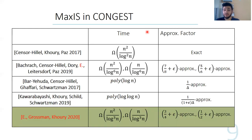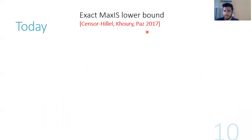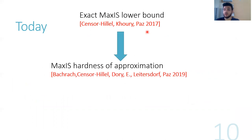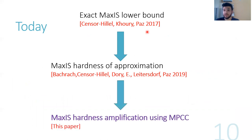In this work, we amplify the previous hardness of approximation result by applying, for the first time, multiparty communication complexity to show lower bounds for CONGEST. This amplification holds both in the approximation factor and the running time. I'll start with describing the lower bounds for exact computation from previous work, then build on that to show hardness of approximation, and then show how to amplify using multiparty communication complexity.